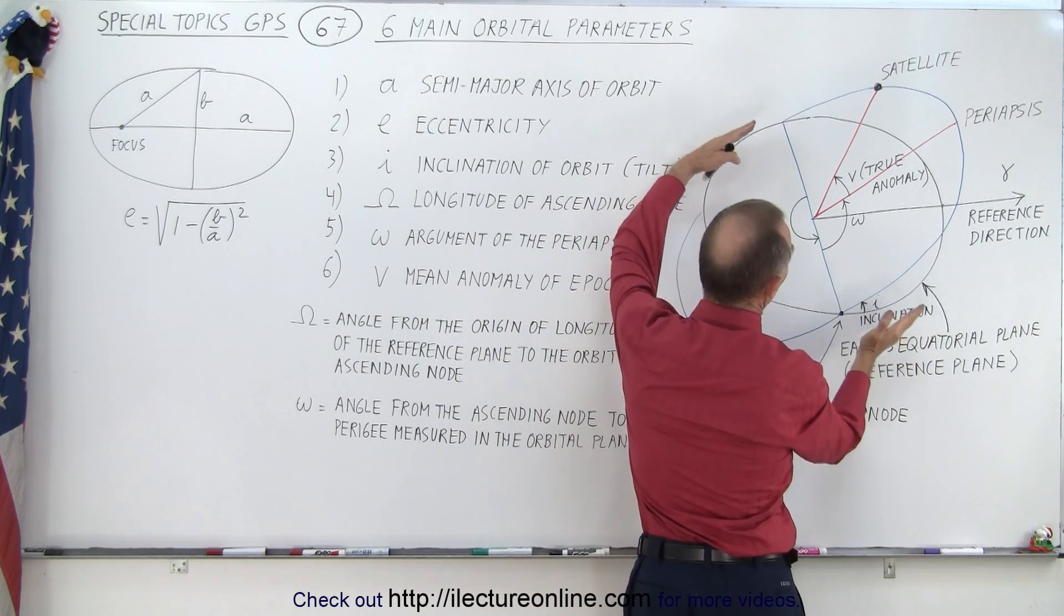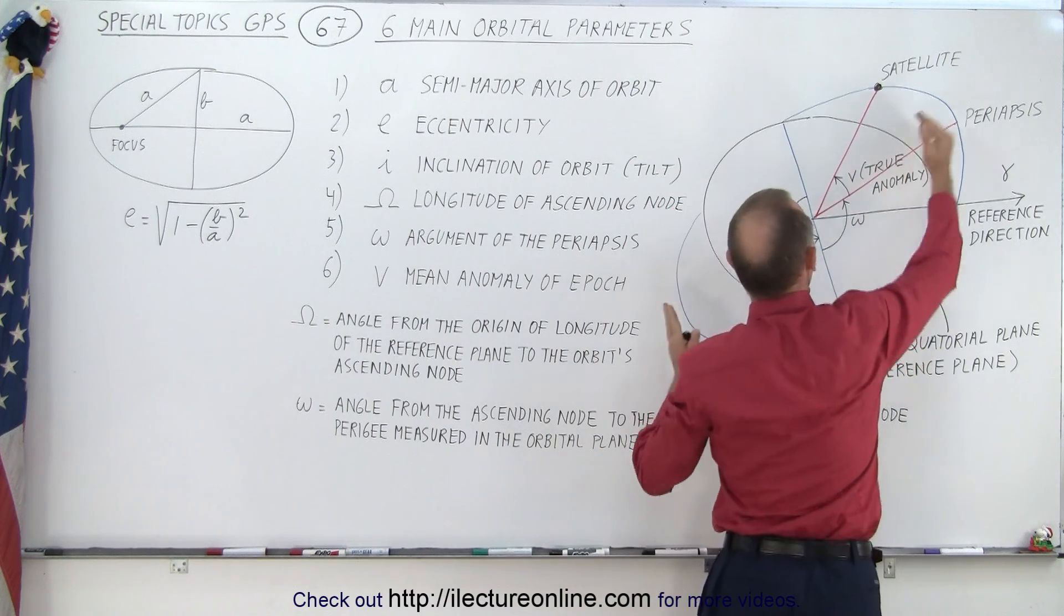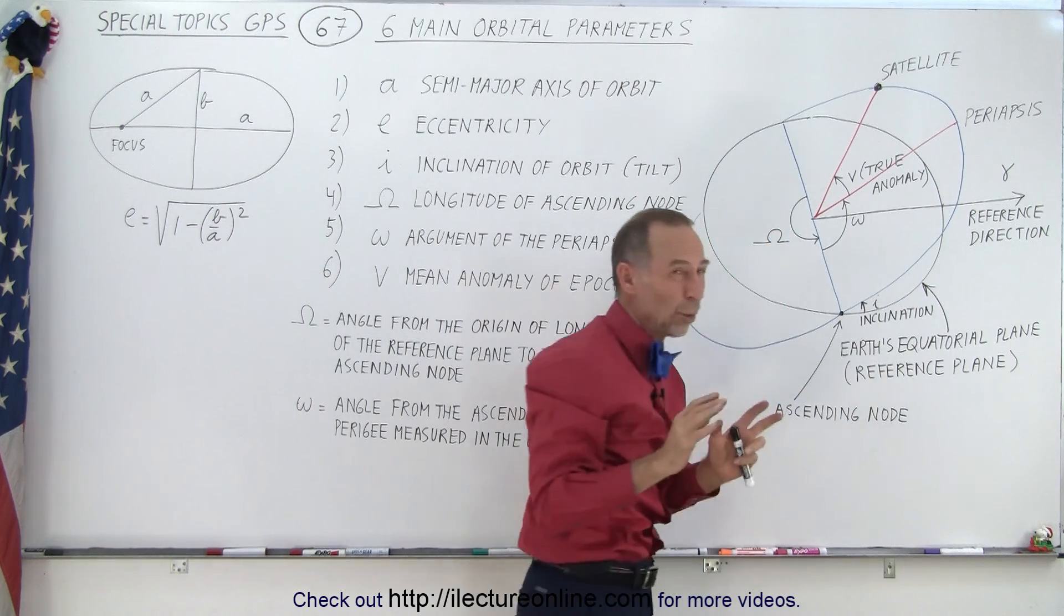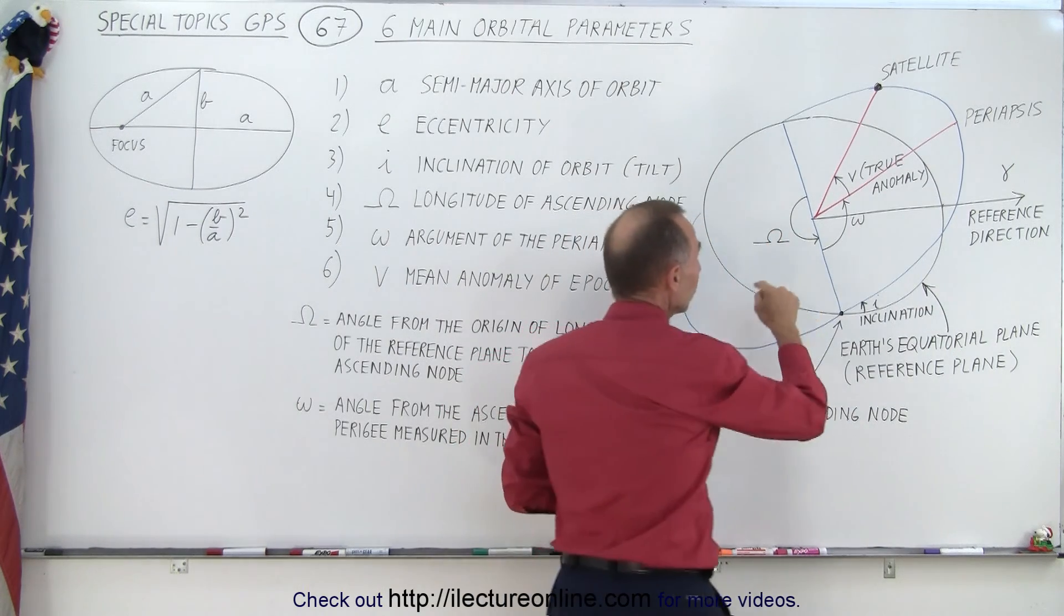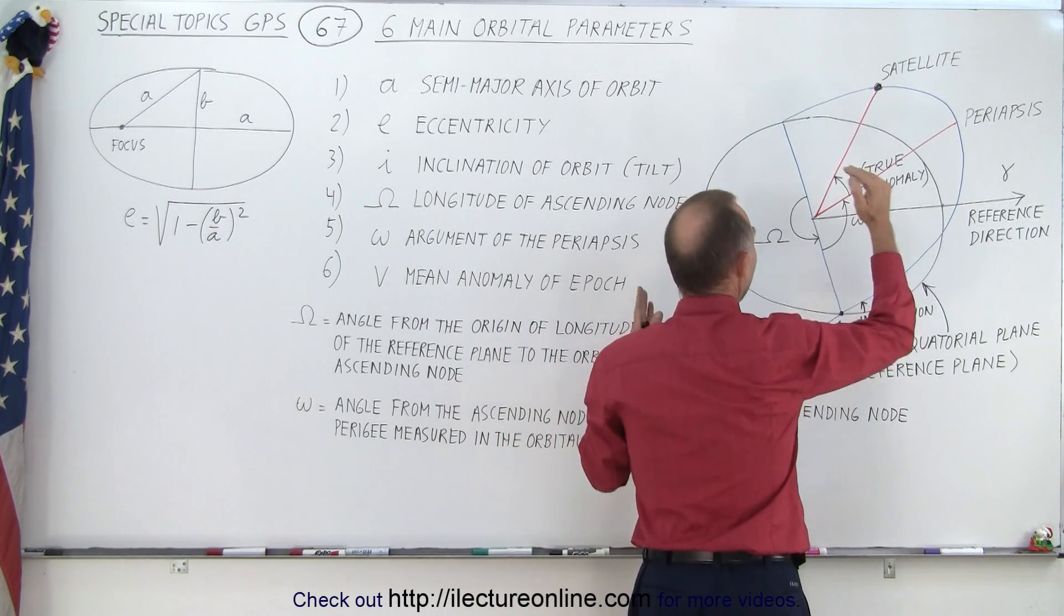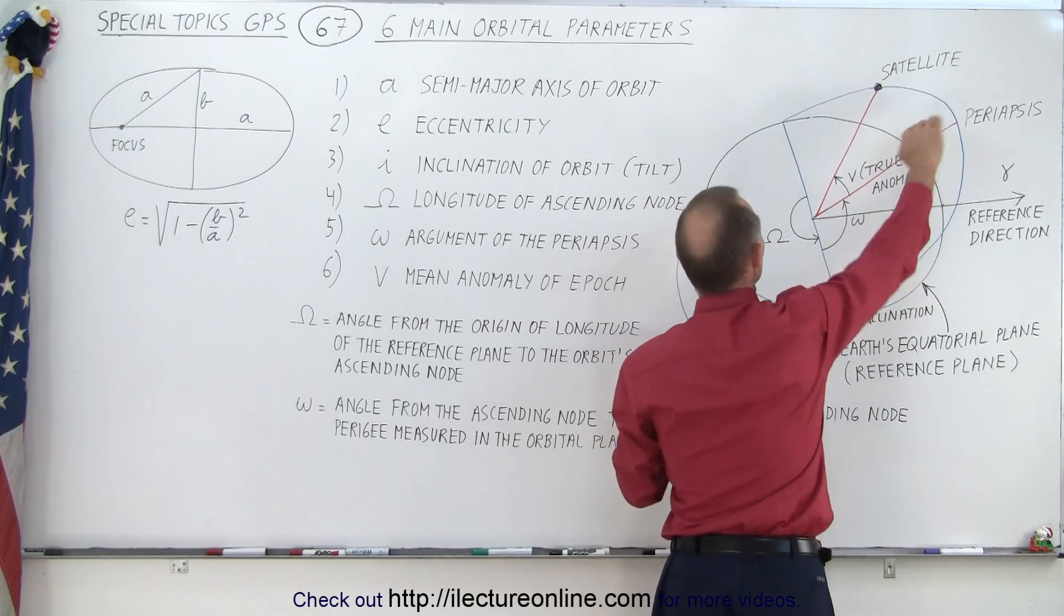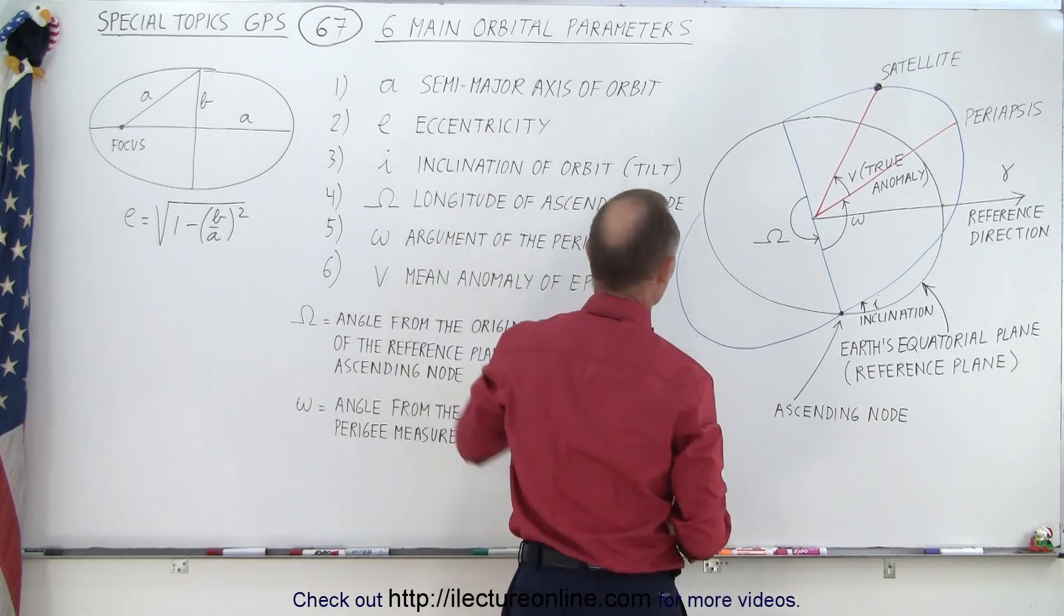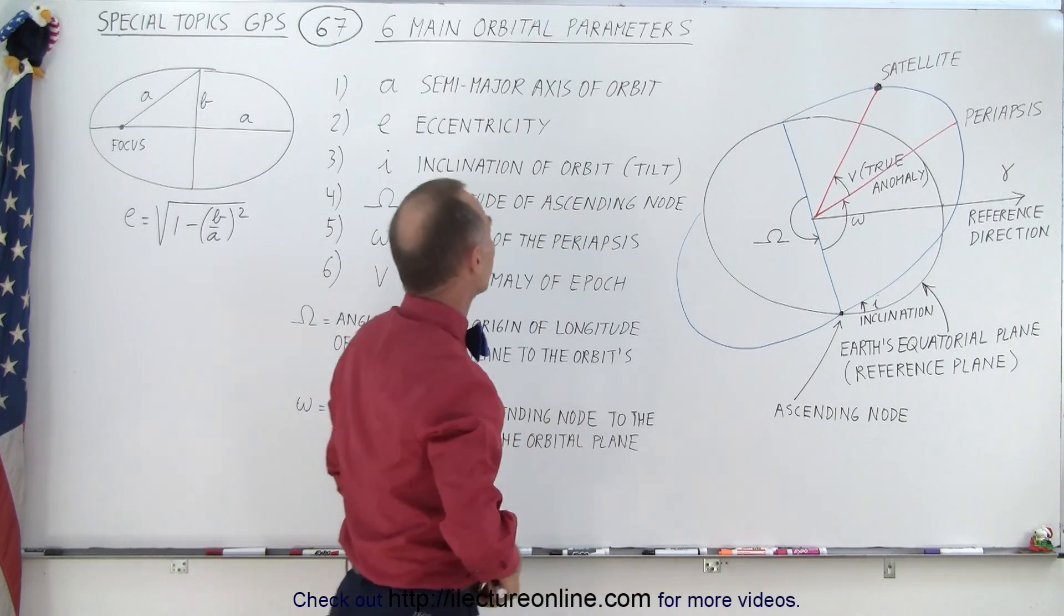So when the orbit is skinnier in this direction and longer in this direction, because it tends to be elliptical in nature, not quite circular but a little bit elliptical, so it would be what we call half the distance along the major axis. That's called the semi-major axis, that's one of the main orbital parameters.